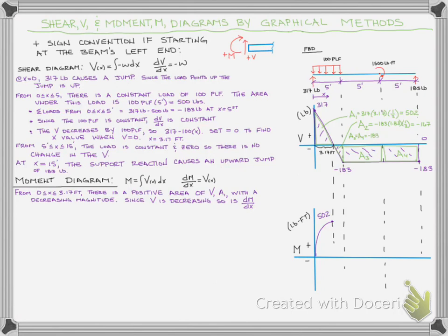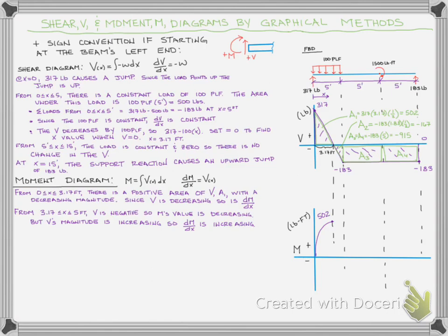The only reason I'm breaking that rectangle into A3 and A4 is because we know we're going to have a jump at the applied moment, so I need the area before 10 feet and the area after 10 feet. A3 is just negative 183 times 5, or negative 915. So now we can start summing up. Adding A2 to A1 gets us over to 5 feet.